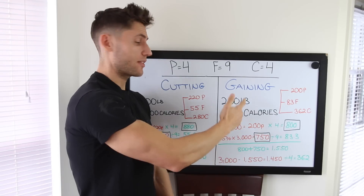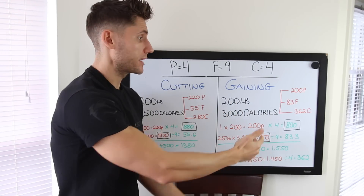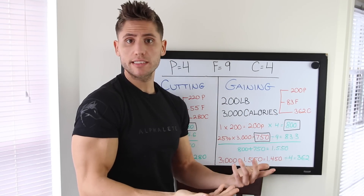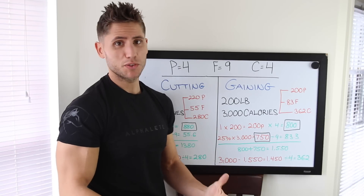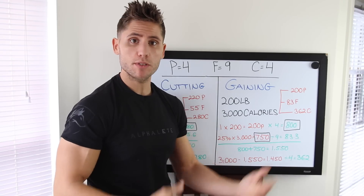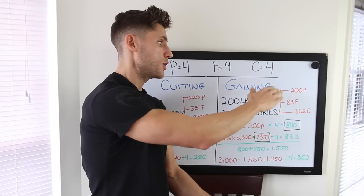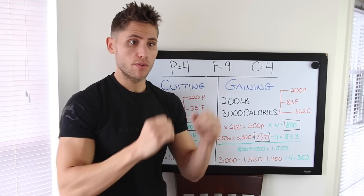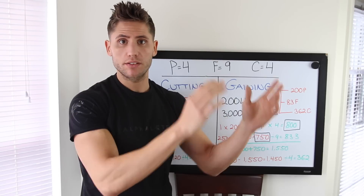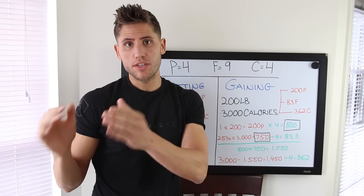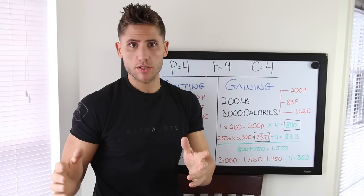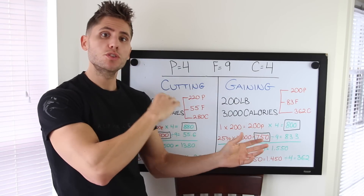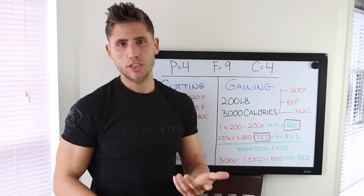So someone bulking at 3,000 calories: 200 grams of protein, 83 grams of fat, and 362 grams of carbs per day. Again, those numbers can change — you can go up to 400 grams of carbs and bring fats down, or bump protein up and bring carbs down. Don't let anyone tell you these have to be your exact macros. Individual preference matters, but sticking somewhere around these ranges is generally a good idea.